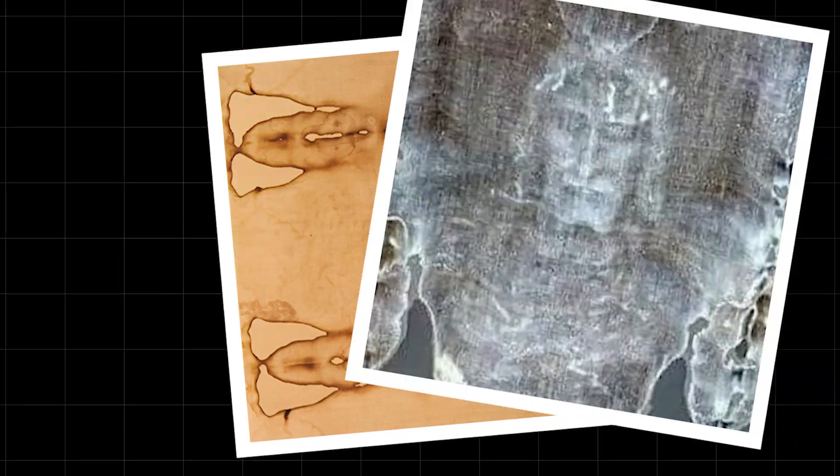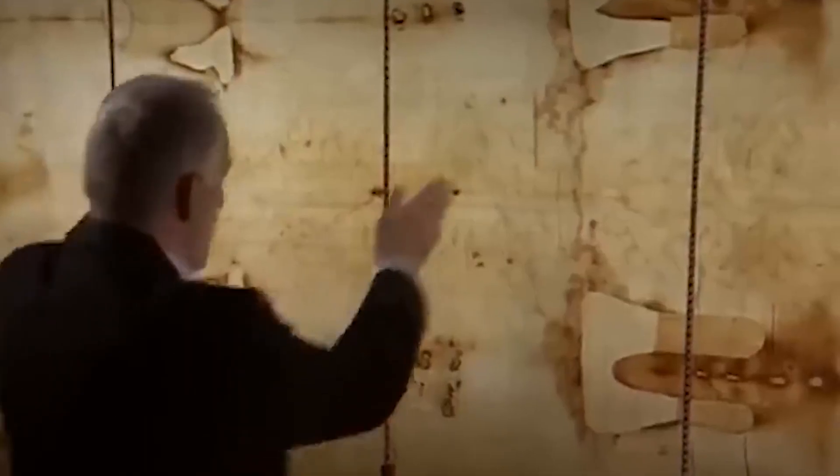The color rests only on the topmost microfibers of the linen. We're talking a depth of just 200 nanometers. For comparison, a human hair is about 80,000 nanometers thick. It's not paint, dye, or pigment. There are no brushstrokes. It's as if the fibers themselves were chemically altered, delicately and precisely.